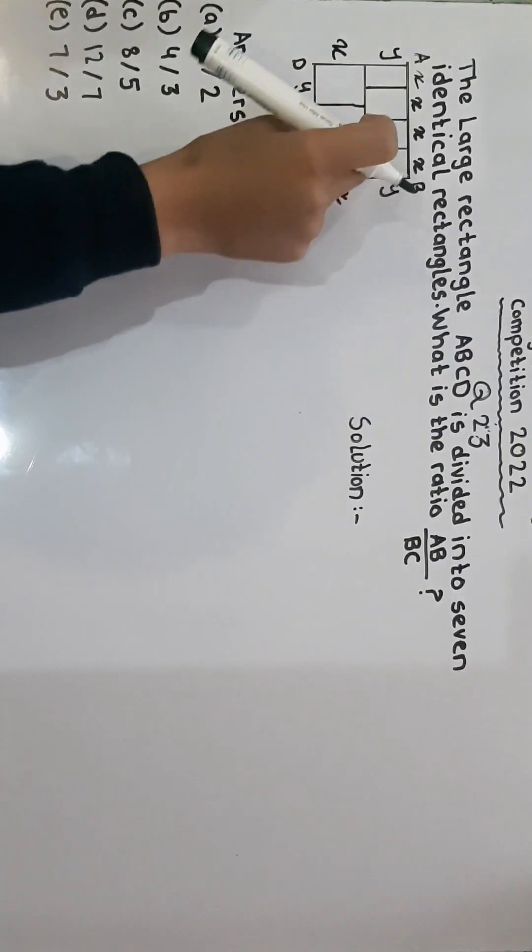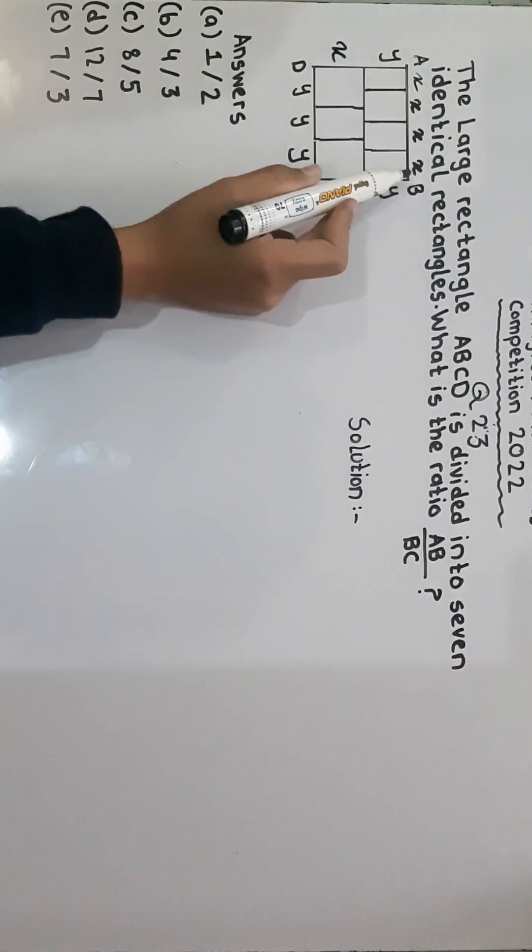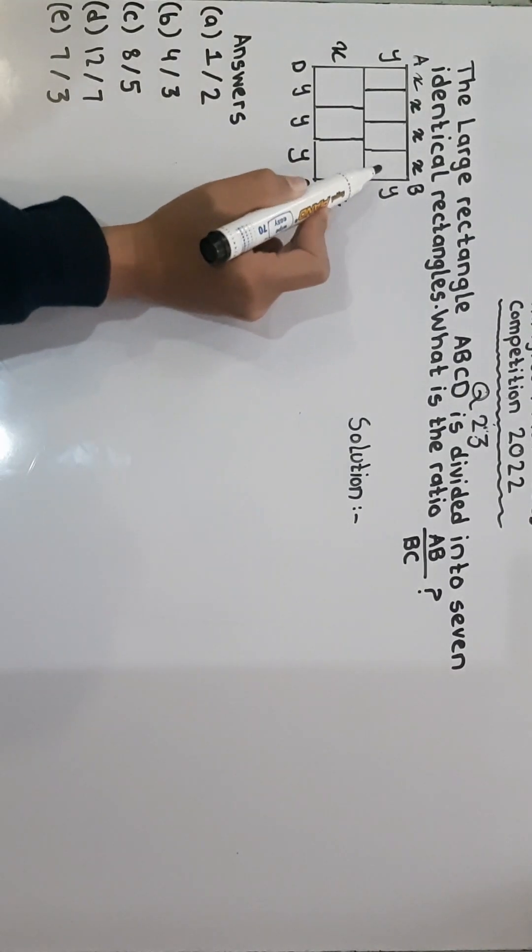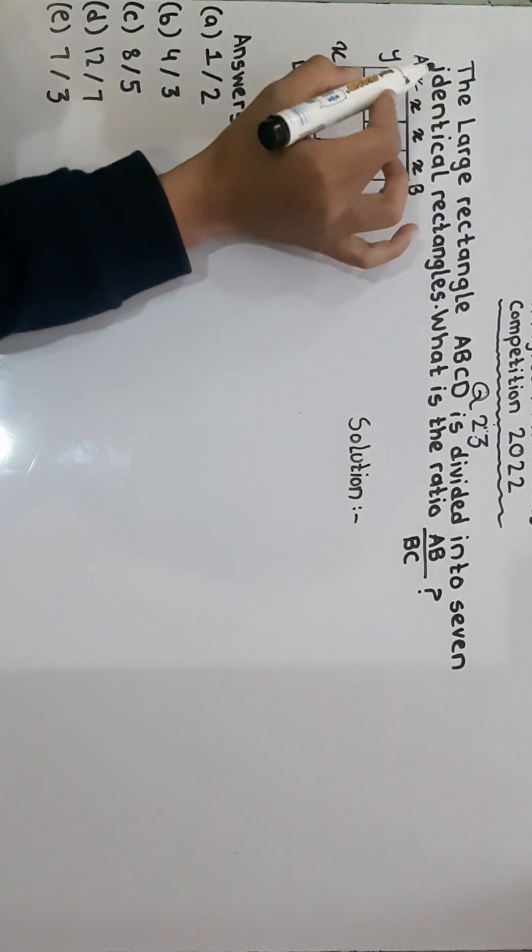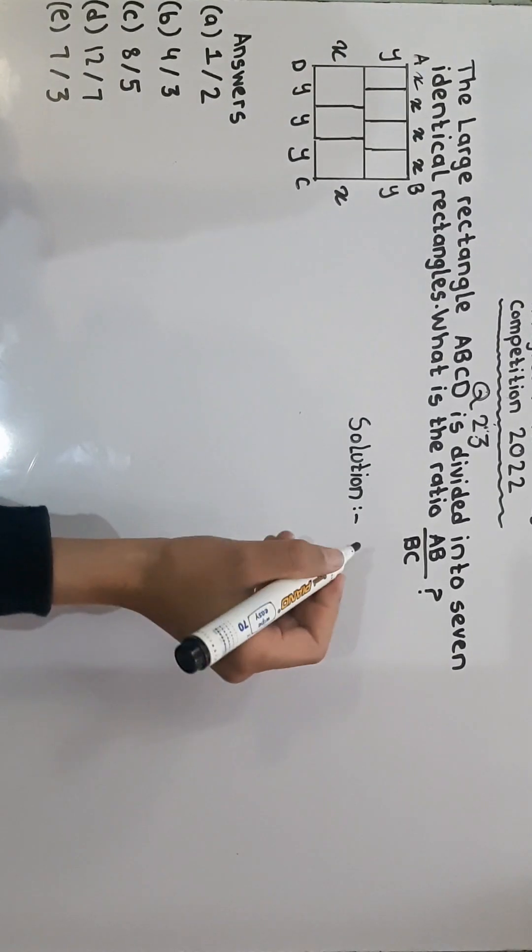The X represents the upper line of the rectangle of one rectangle and the Y represents this line of the rectangle. This means now we have to find AB divided by BC.